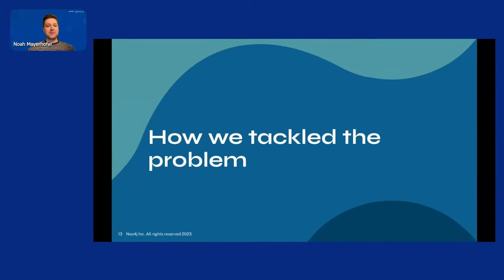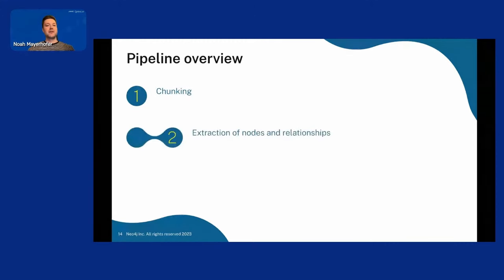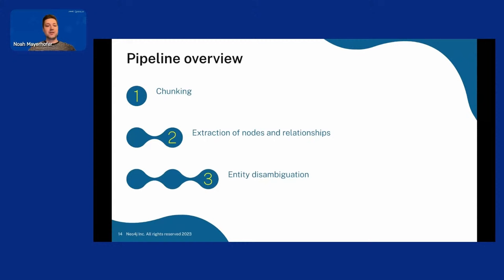So how did we tackle the problem? We created a pipeline consisting of three steps. The first step is chunking. The second step is extraction of nodes and relationships. The third step is entity disambiguation. I will walk through these steps one by one — why we apply them and how — and then I will show you the results.